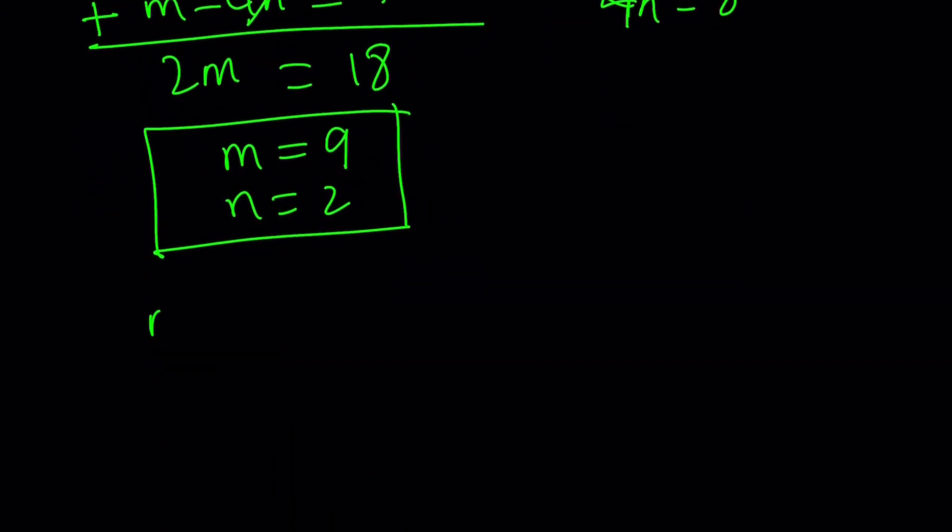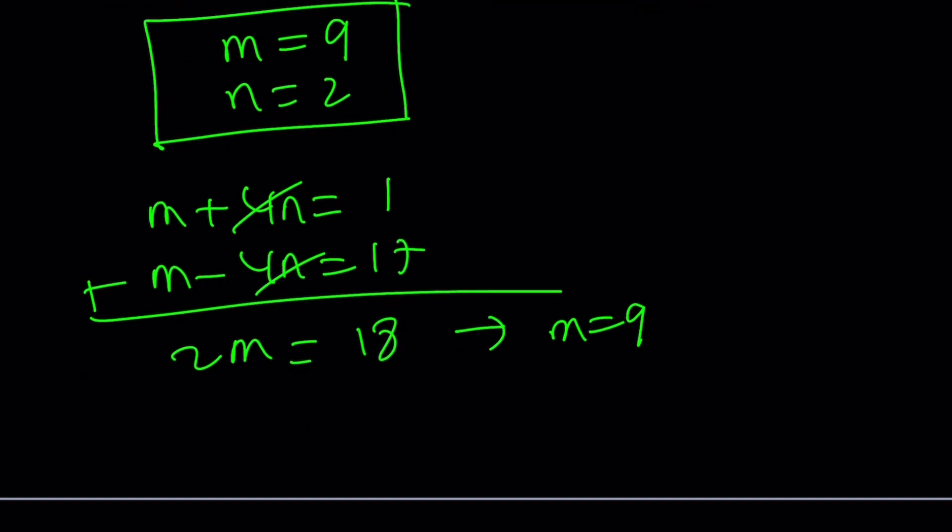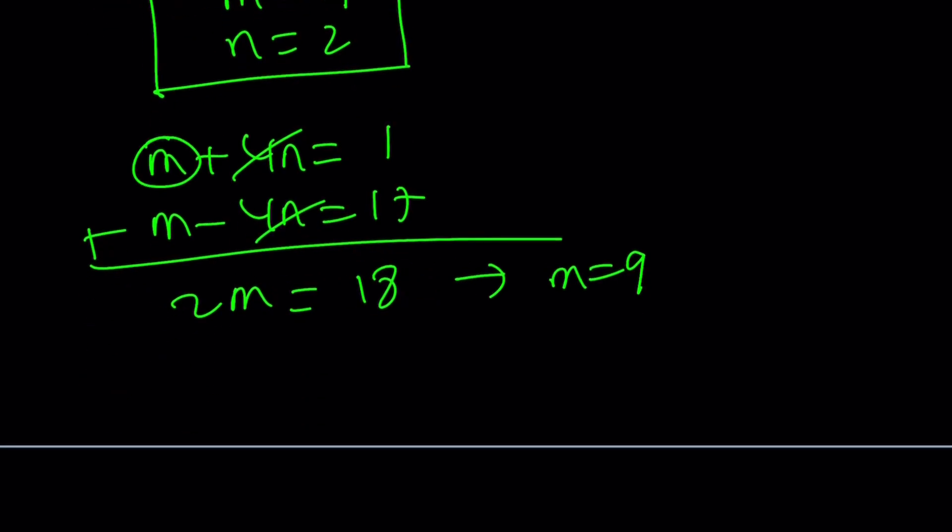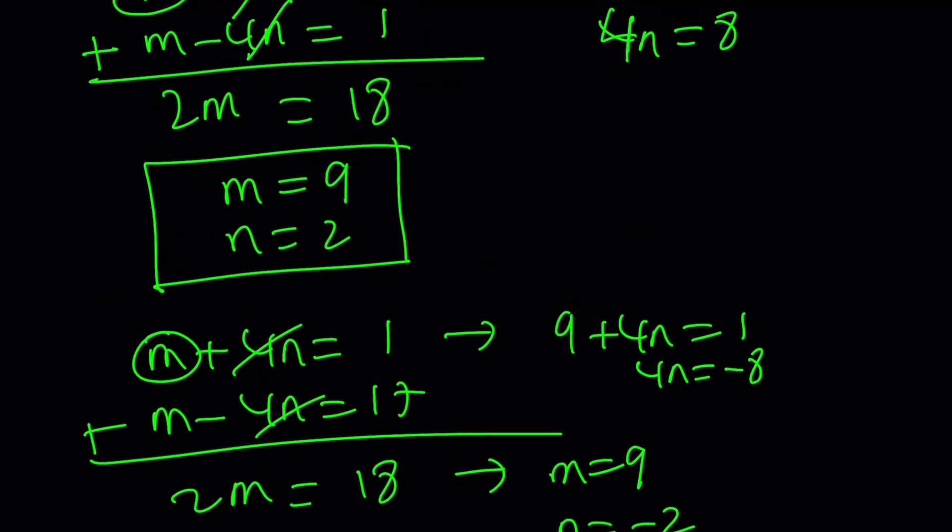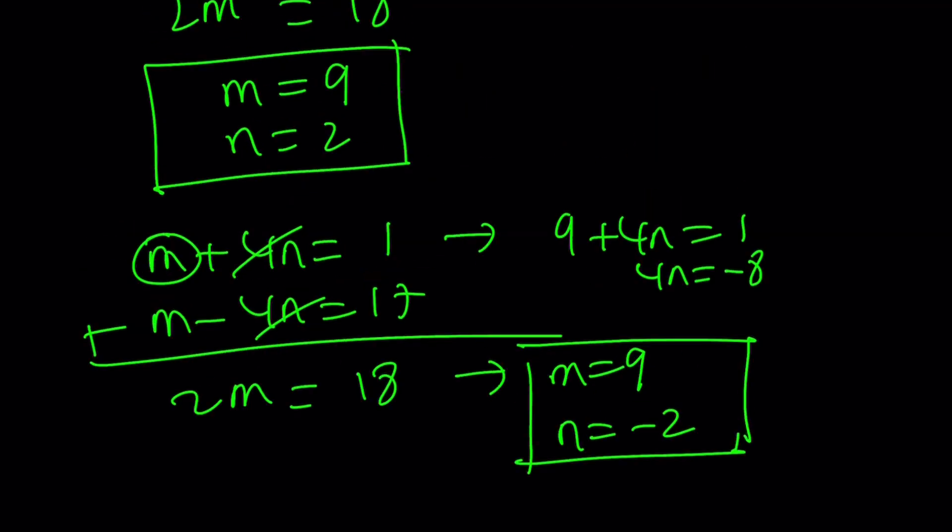So let's go ahead and do the same thing for all of these pairs. m plus 4n is 1, and m minus 4n is 17. Now what's going to happen is the m value is not going to change. When you add these up and divide by 2, you're going to get the same thing: 2m equals 18, and m equals 9. When you plug in m equals 9 though, you're going to get something slightly different, because it's going to be 9 plus 4n equals 1, which means 4n equals negative 8, and that implies n equals negative 2. So in the first case, n was a positive 2. Now it is a negative 2. So 9 comma plus minus 2 works.